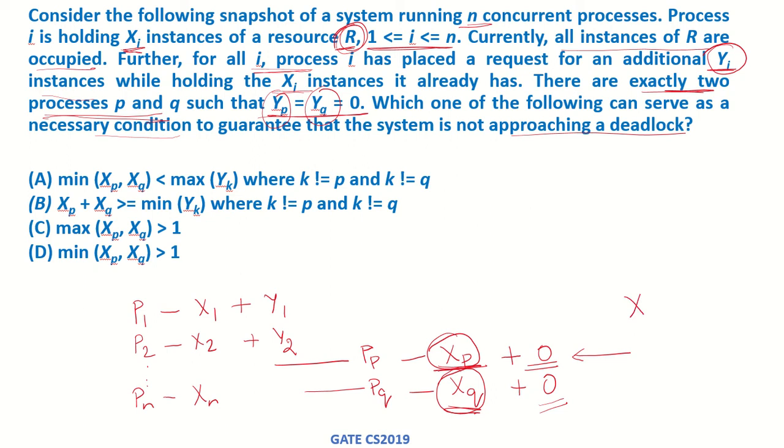Now we have xp and xq resources which are additional instances of r in the system. So all these processes p1 to pn except for p and q, can now utilize these xp plus xq resources to complete their execution.